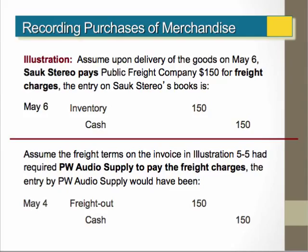Here's an example of the purchase of inventory and how we would account for the freight. Assuming upon delivery of the goods on May 6th, the buyer has to pay $150 for the freight charges. We would increase inventory by $150 and credit cash. The reason is that we want to account for the cost of the inventory to include all additional costs to have the inventory in a saleable condition. When we purchase inventory, we have to account for all costs to get the inventory to our location in a saleable condition.